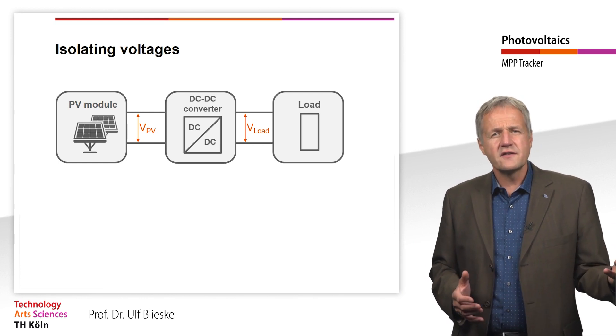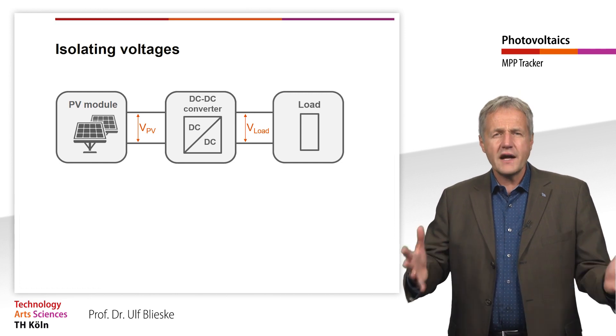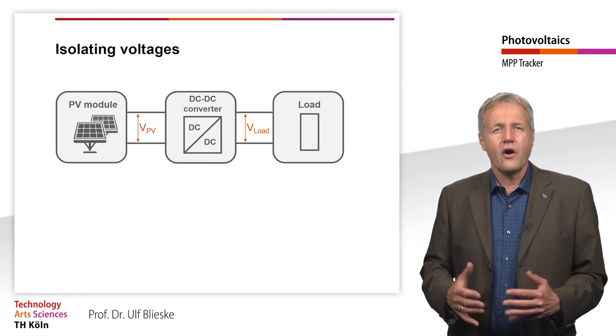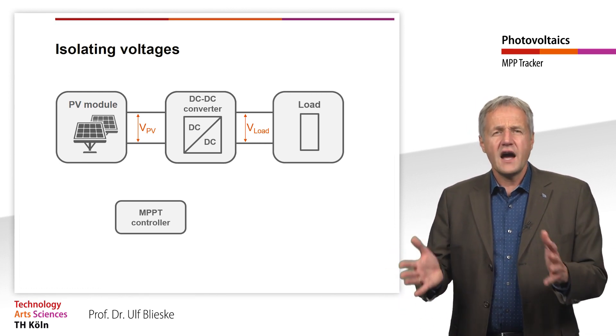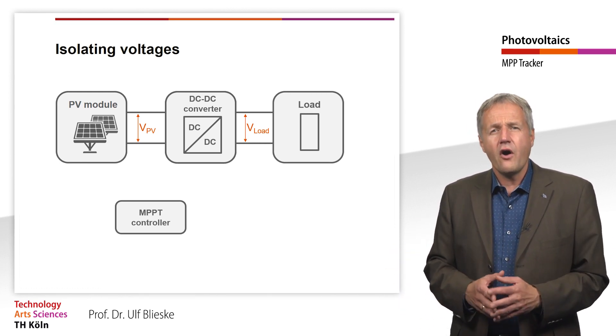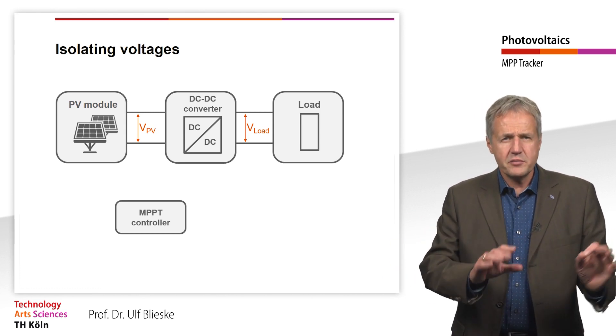This process, that is to say the finding of the MPP, is called maximum power point tracking or MPPT. An MPP tracker observes the IV curve of a module or an array of several modules and searches for the MPP.